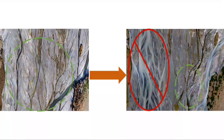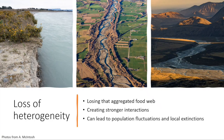This is also important because we have reduced heterogeneity due to things like weed invasion. That river in the middle there kind of just looks like a main braid, so the food web in that channel will be much more linear. We're losing the aggregated levels of resources and creating stronger interactions between species, which can lead to population fluctuations and local extinctions. It may be one of the contributing factors for population declines on our lower braided rivers.